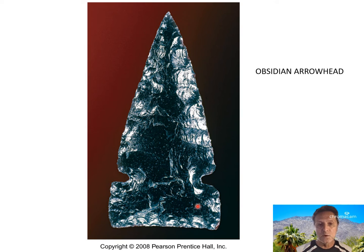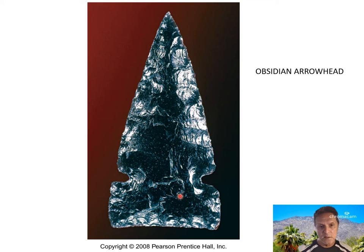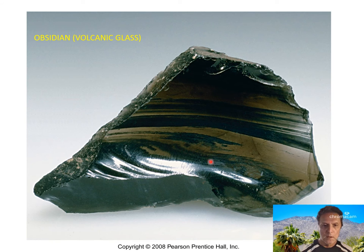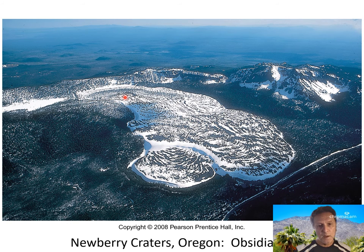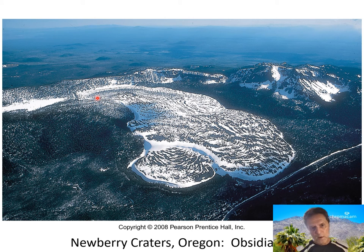Obsidian has been used for many centuries as arrowheads, spear points, knife blades, cutting tools, and scraping tools. It may interest you to know that obsidian is still used today by surgeons because it has such a fine, thin edge — stone age technology being used by modern surgeons. Here's another piece of obsidian; the orange-brown color comes from other minerals entrained in the volcanic glass. This is an obsidian flow at Newberry Craters, Oregon — a silica-rich lava that spilled out of a volcanic vent and cooled quickly into volcanic glass.